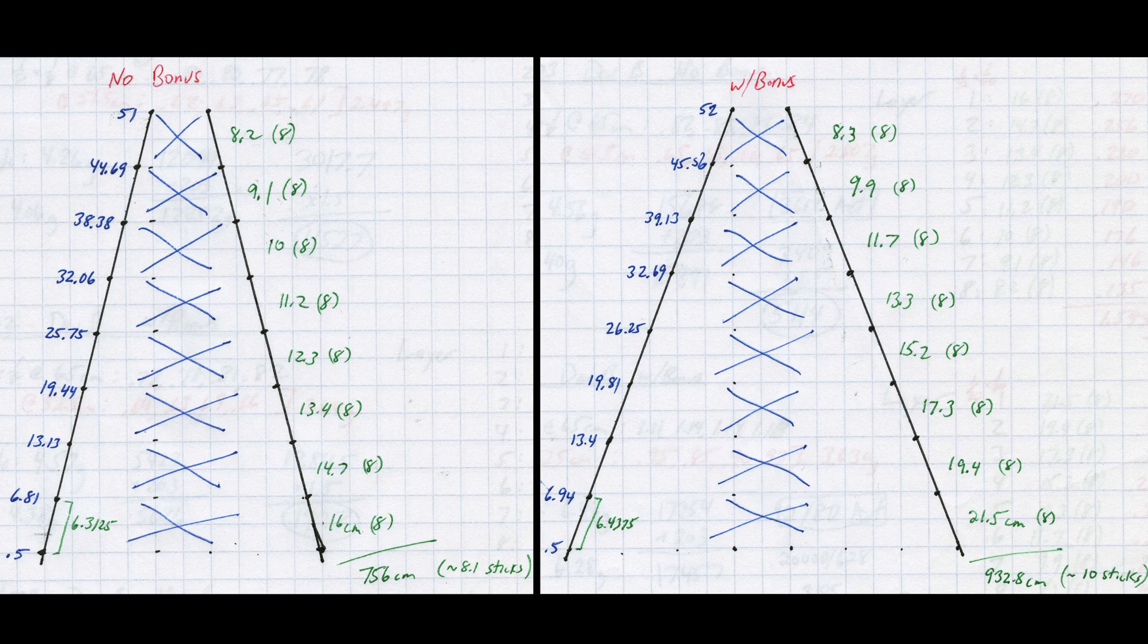With some simple math, it's easy to get the total length of all the cross members. Here it's 756 cm for the non-bonus version and 932.8 cm for the bonus tower. My balsa sheets are just over 36 inches long, so I can estimate the number of complete strips I'll need for each design, roughly 8.1 and 10 respectively.